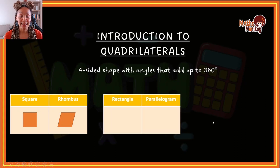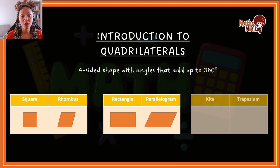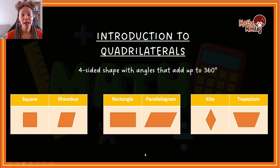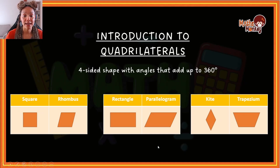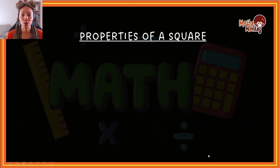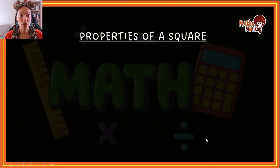Then we're going to look at the rectangle and the parallelogram — that's what the rectangle looks like and that's what the parallelogram looks like. And then lastly, we will focus on the kite and the trapezium. But in this specific video we're focused just on squares and rhombuses, and then I will make the next video on the rectangle and parallelogram, and then kite and trapezium as follow-up videos. So let's zoom in to the properties of a square.